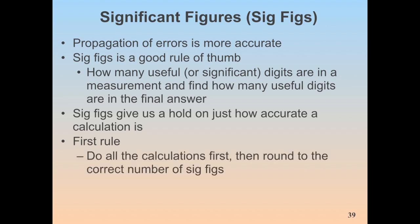The first and really important rule: when doing a calculation, do all the numbers first and then round to the correct number of sig figs at the very end. If you round after every little step to, say, three sig figs, you introduce rounding errors that can build up and leave you several percent off from the actual answer. So keep the full calculator value through the whole calculation and only round your final answer.